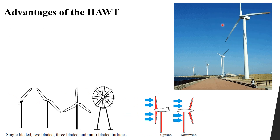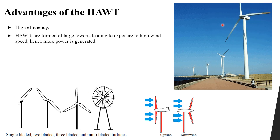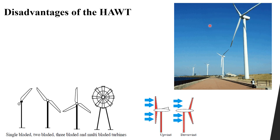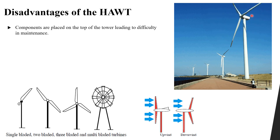The advantages of the horizontal axis wind turbine are: first, it has high efficiency. Second, it uses large tall towers which expose it to high wind speeds, meaning more power is generated compared to the vertical axis wind turbine. Third, it has good self-starting capability due to the high wind speed and lightweight blades, leading to a low starting torque.